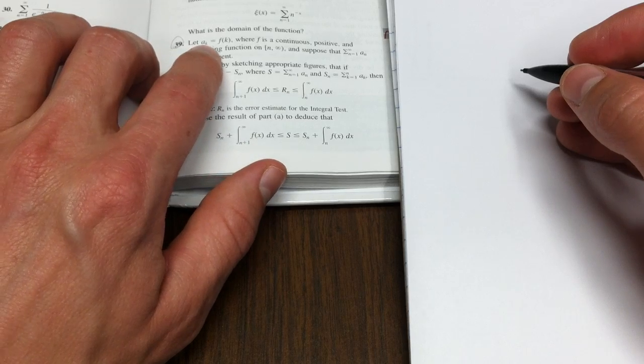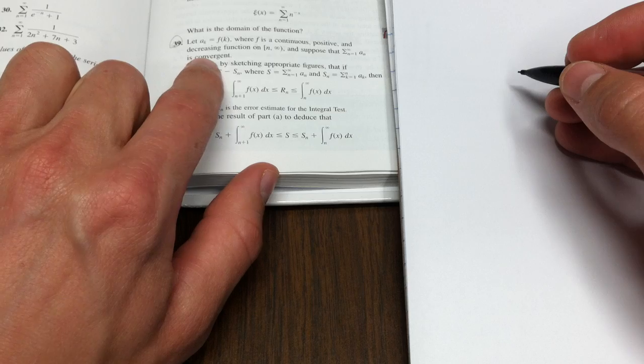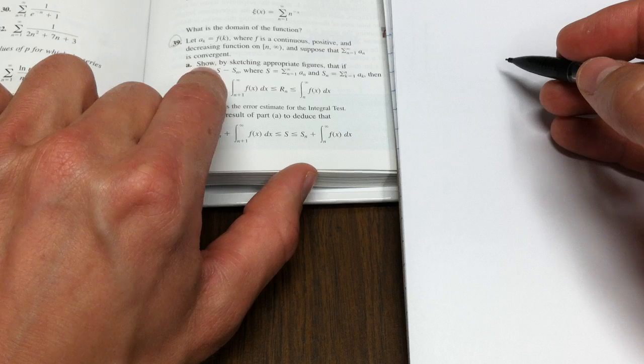So let ak equal f of k, where f is a continuous positive and decreasing function on the interval n to infinity, and suppose the series is convergent.